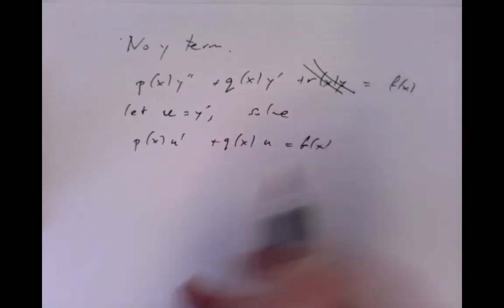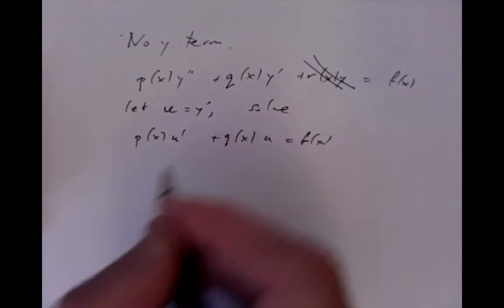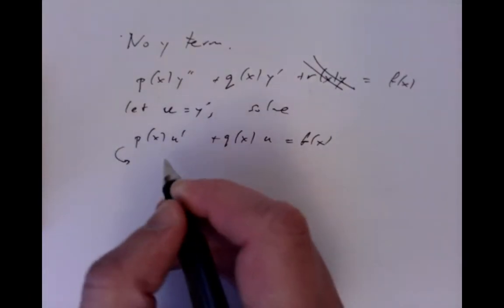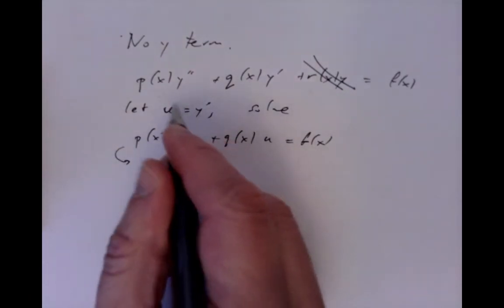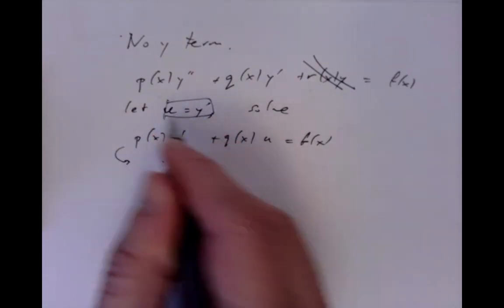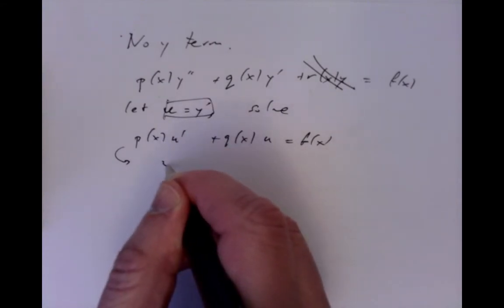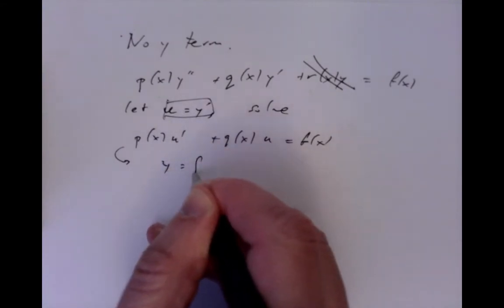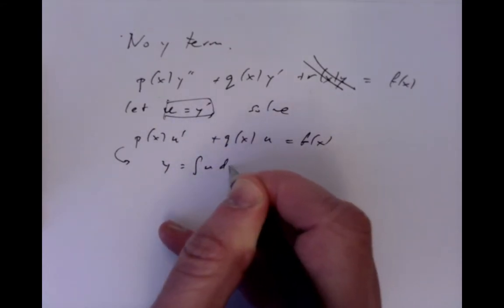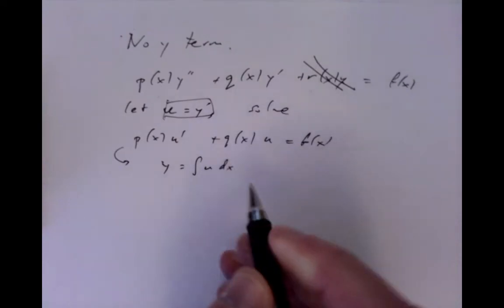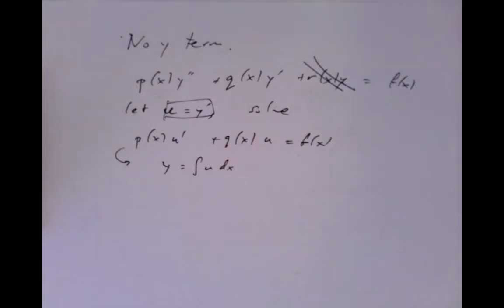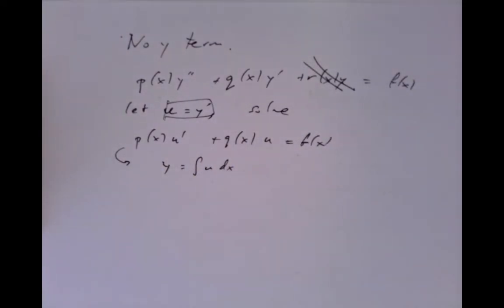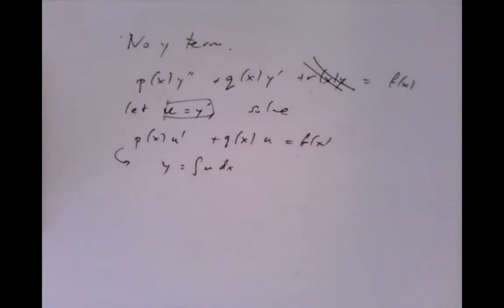And that's an easier system to solve. Then once we have the solution for that, we simply have to solve y prime equals u, or in other words, y equals the integral of u dx. So if I can solve this equation and then carry out this integral, I'll get the general solution.